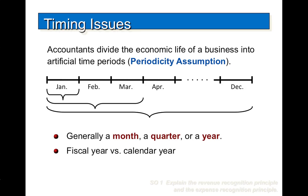Many business transactions affect more than one of these arbitrary time periods. For example, a new building may be purchased, or a new airplane will be used for many years. It doesn't make sense to expense the full cost of the building or the airplane at the time of purchase because each will be used for many subsequent periods. Instead, we determine the impact of each transaction on specific accounting periods.